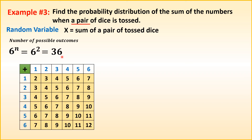Consider the table: the first die has faces 1–6, and the second die also has faces 1–6. To get the possible outcomes, we add the first die and second die. For example: 1+1=2, 2+1=3, 3+1=4, 4+1=5, 5+1=6, 6+1=7, and so on for all rows. Continuing this pattern through all combinations gives us 36 outcomes.